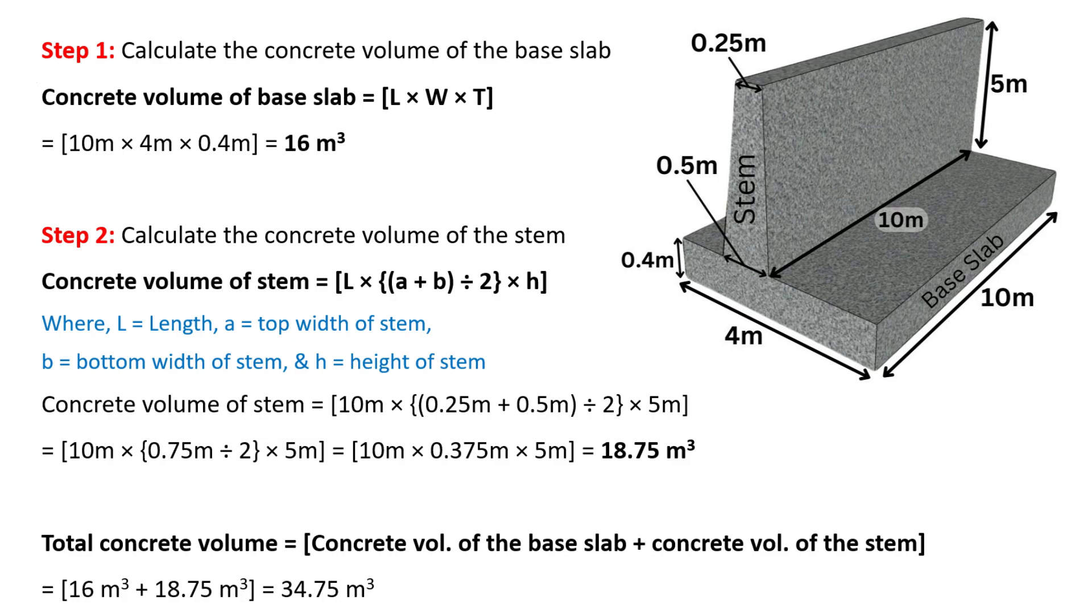The second step is to calculate the concrete volume of the stem. The concrete volume of stem is calculated by using the formula L times (A plus B) upon 2 times H. Where L is the length of stem, A is its top width, B is the bottom width and H is the height of stem. The length of stem is given as 10 meters, the top width is equal to 0.25 meters, bottom width is 0.5 meters and height of stem is 5 meters. On substituting all these values, the concrete volume of stem will be equal to 18.75 cubic meters.